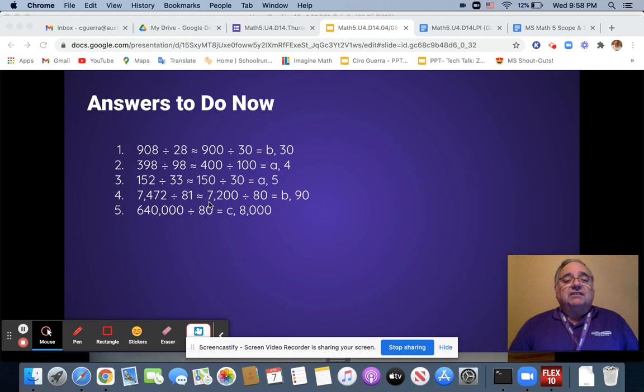The next one, we took 7,200 divided by 80, which gave us 90. And this one was one that you had the day before, 640,000 divided by 80, gives you 8,000. All right.